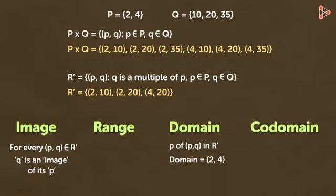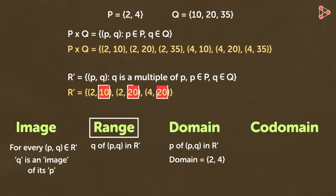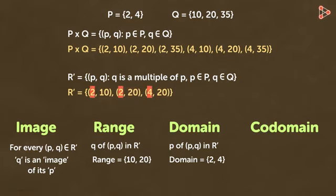Now it would be very easy to guess what range means. The set of Q of all ordered pairs P,Q in set R' is called the range. Or we can say that the second elements of all ordered pairs in relation R' is called the range. The range contains the elements 10 and 20. So all the first elements form the domain and all the second elements form the range.